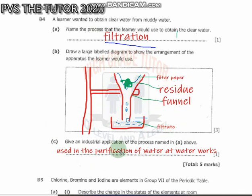If you name this process, you need to know how to draw this separation technique. We have a filtration setup. You have the filter paper there, residue which is mud particles, a funnel, a clamp stand, and filtrate at the bottom.